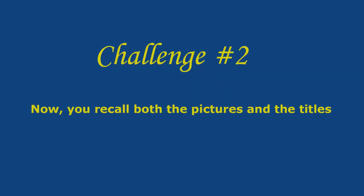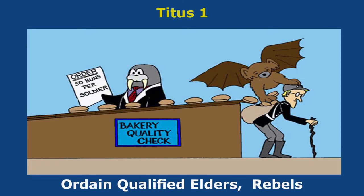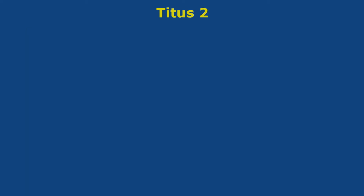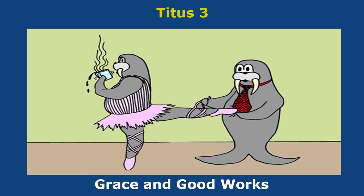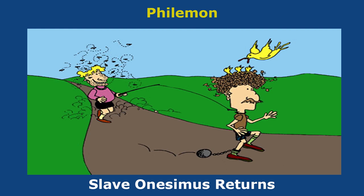Now you're ready for challenge number two. I'll just give you the numbers — you think of the pictures and then state the titles. Titus chapter one is Ordain Qualified Elders, Rebels. Titus chapter two is Sound Doctrine for Young and Old. Titus chapter three is Grace and Good Works. Philemon chapter one is Slave Onesimus Returns.